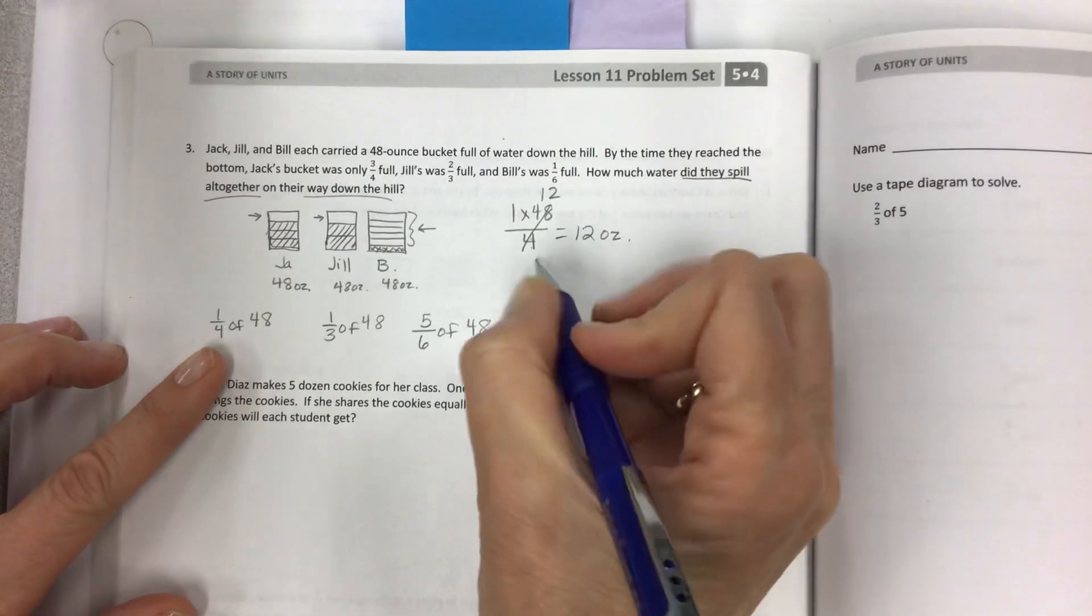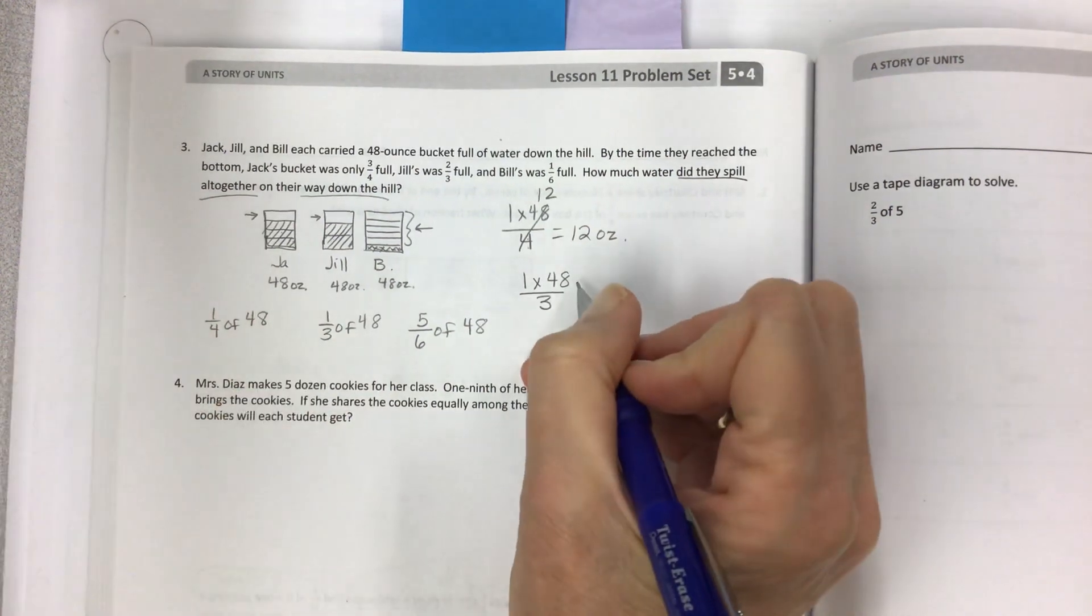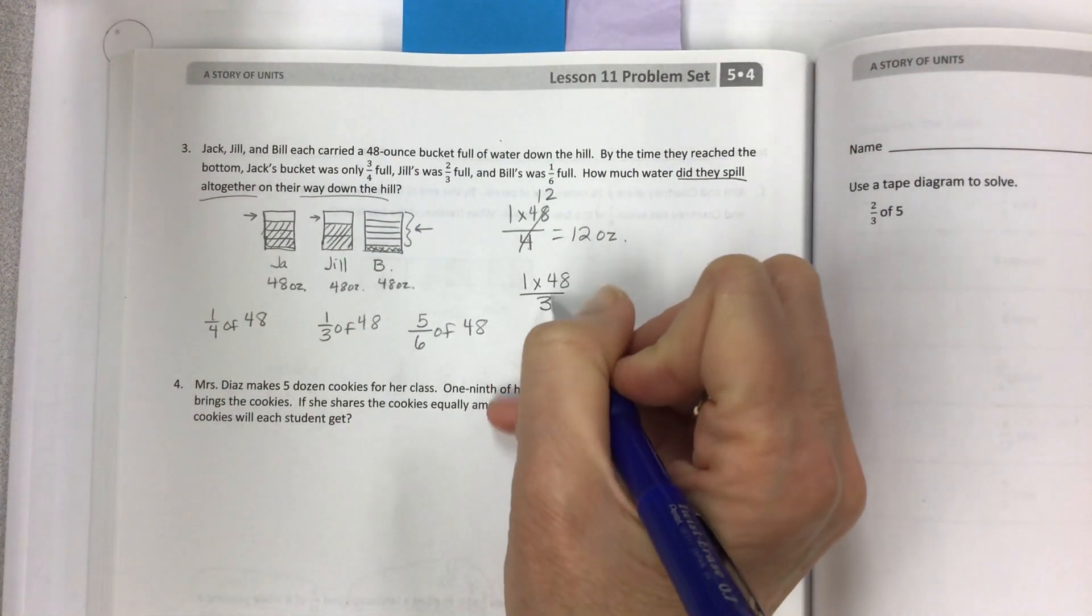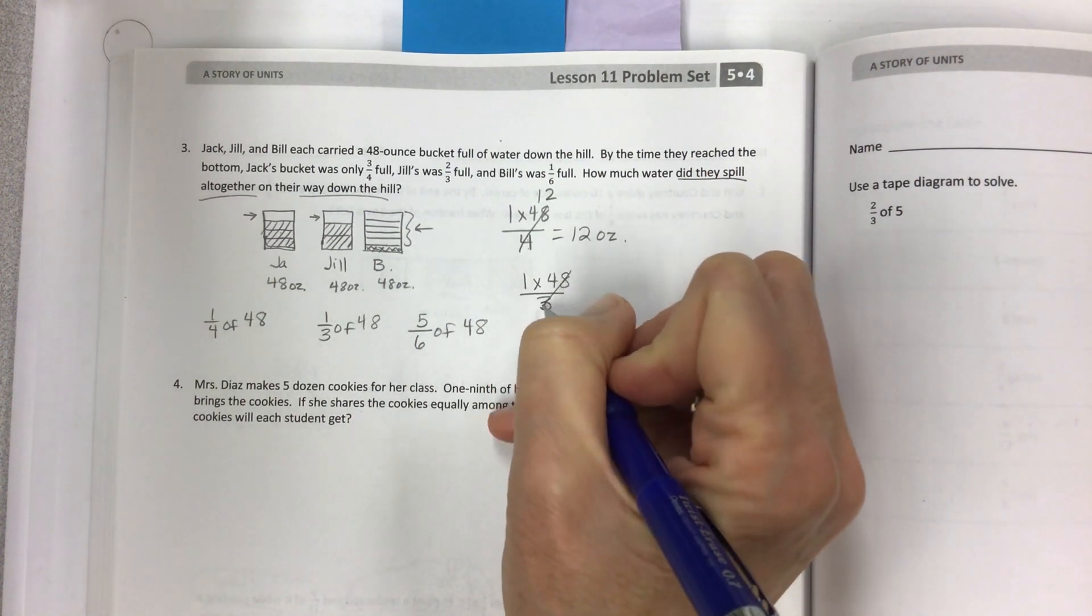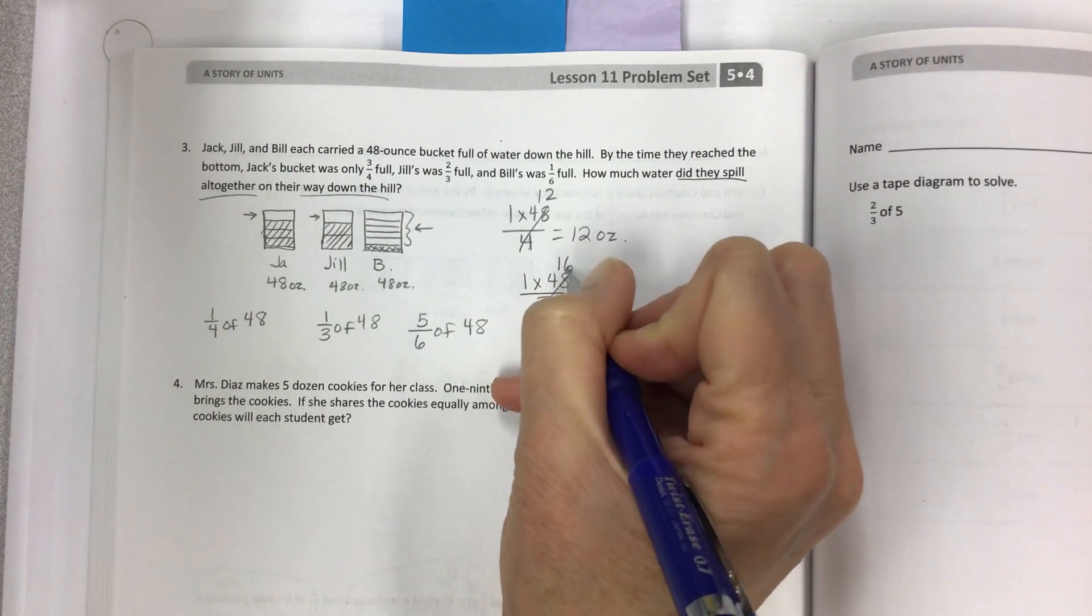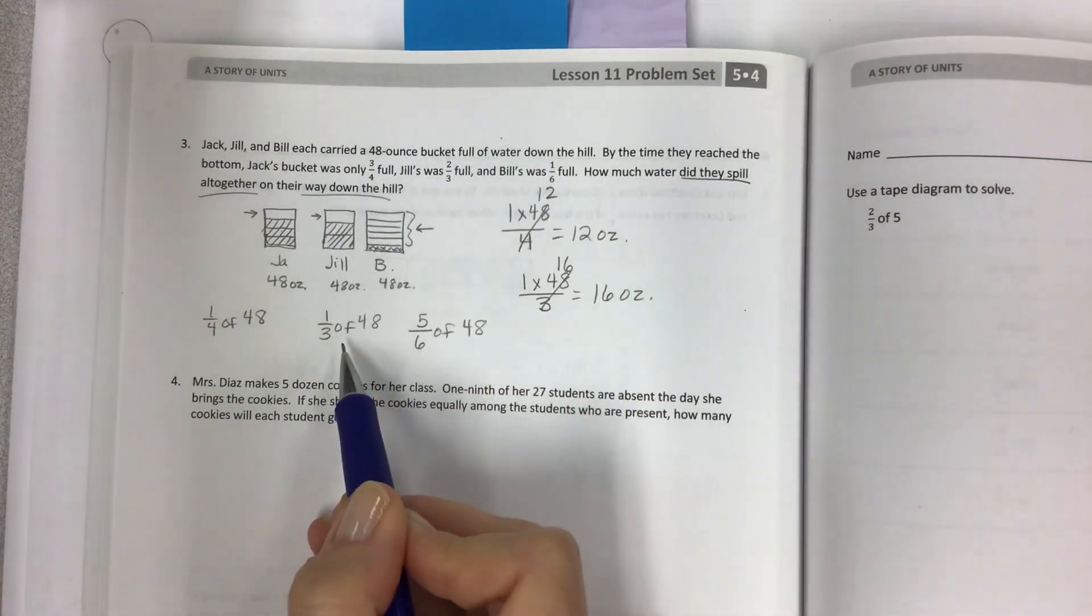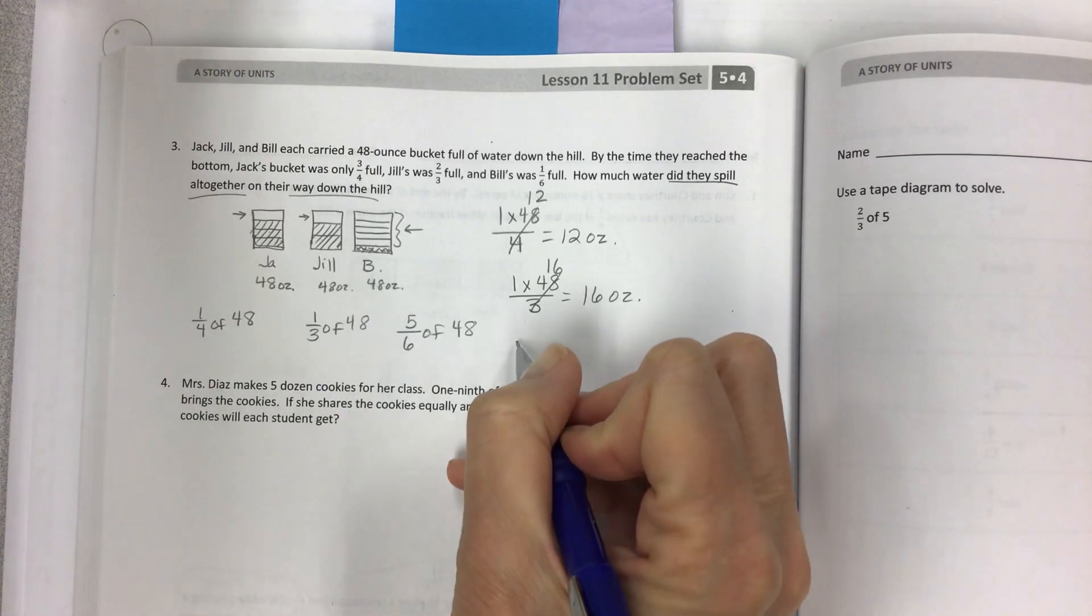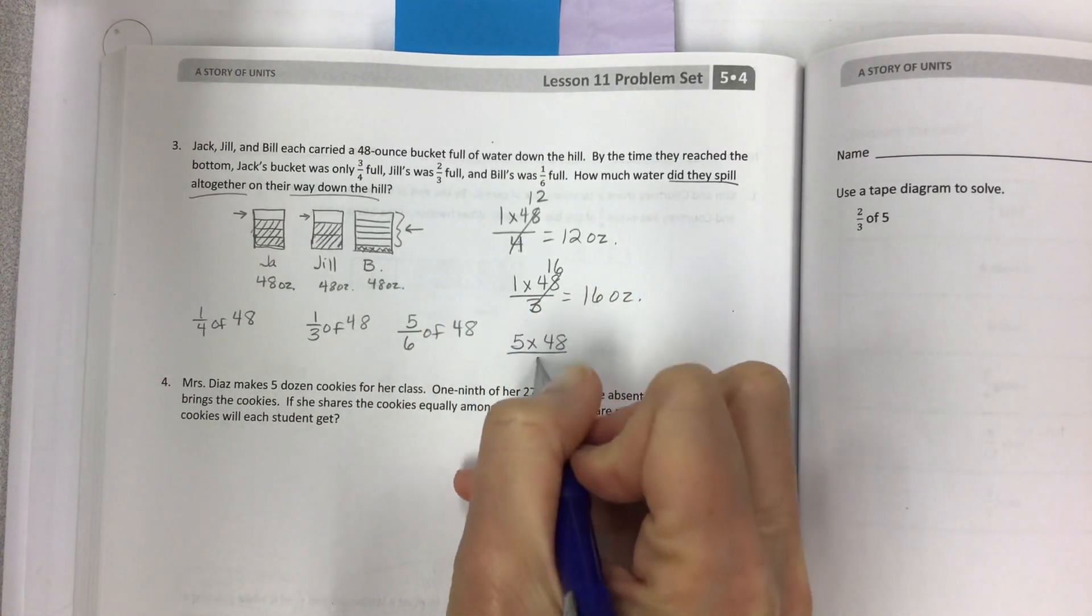Next one, one times 48 over three. If you use three as your divisor, I'm going to try to simplify this by dividing four by three. You get one. There's one left over. That makes 18, and that is six. So 16 ounces is spilled on the hill for Jill.